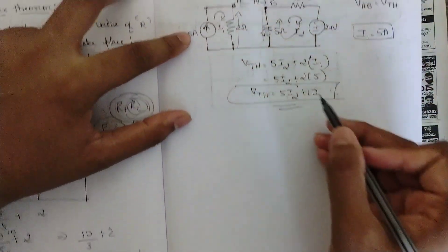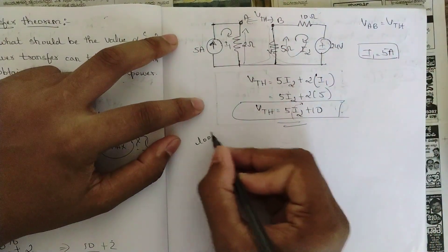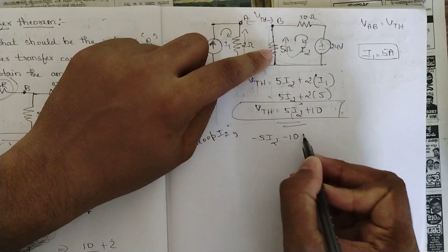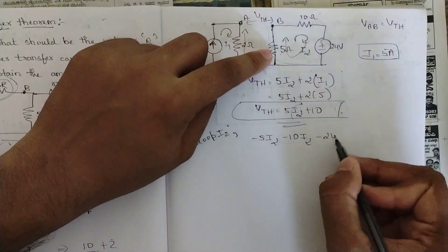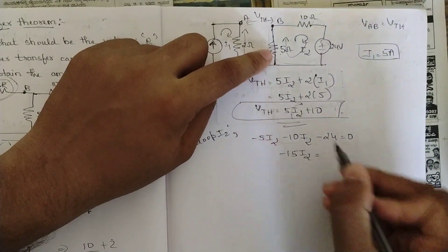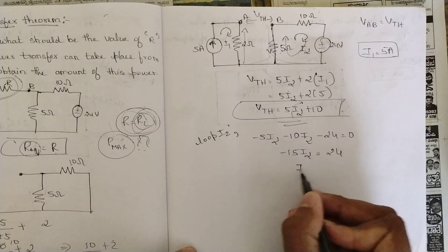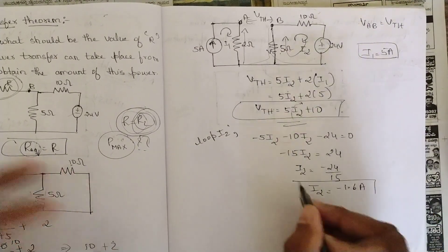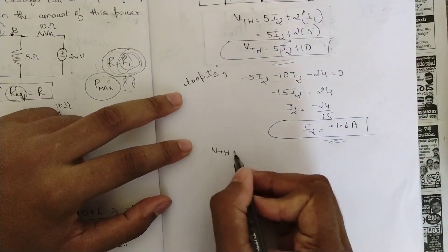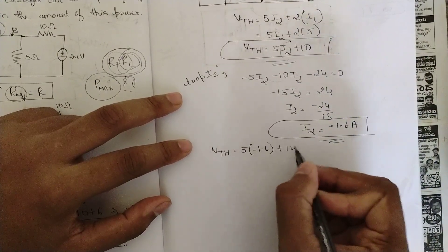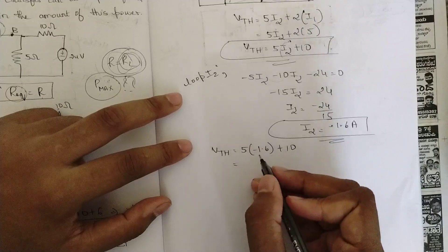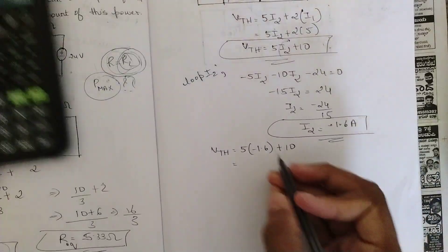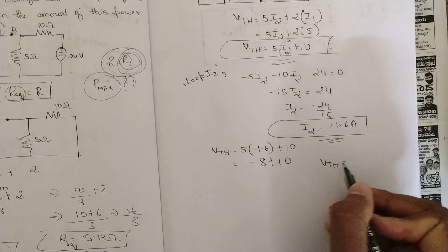To find I2, we apply KVL on loop 2. Starting from the 5 ohm resistor: −5·I2 − 10·I2 − 24 = 0, giving −15·I2 = 24, so I2 = −24/15 = −1.6 A. Substituting back: Vth = 5 × (−1.6) + 10 = −8 + 10 = 2 V.